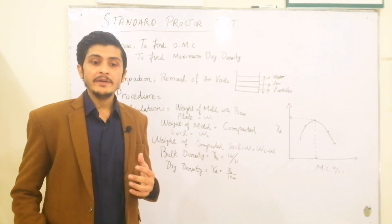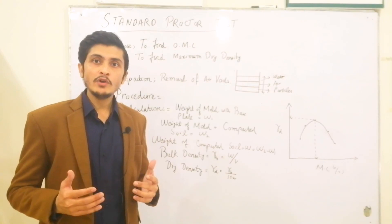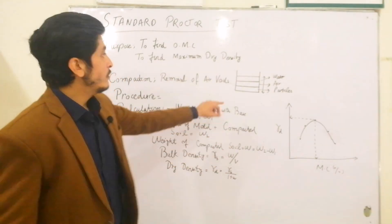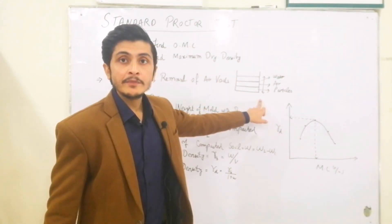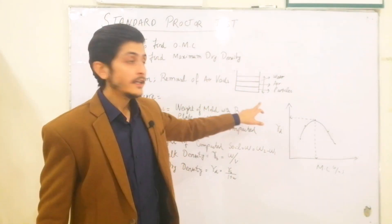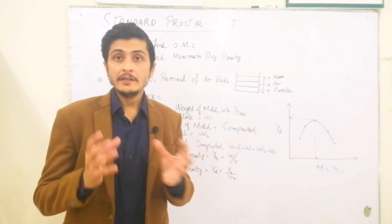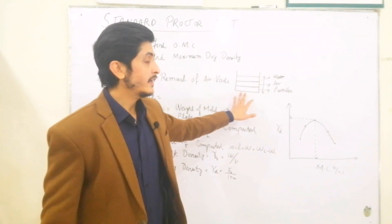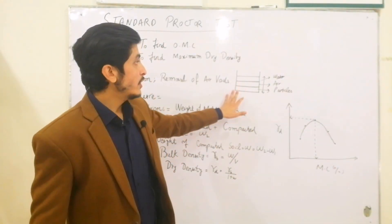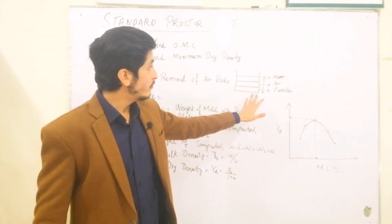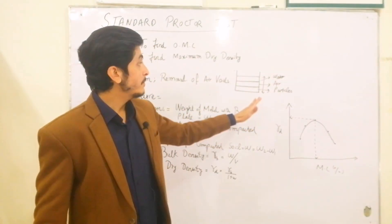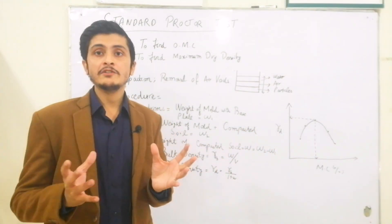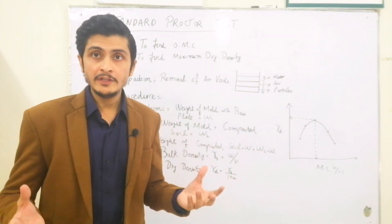Compaction is basically the removal of air voids from the soil sample. For example, if we take a unit volume of soil at a particular point, the soil mass consists of water, air, and soil particles. It's a homogeneous mass which makes a homogeneous volume.